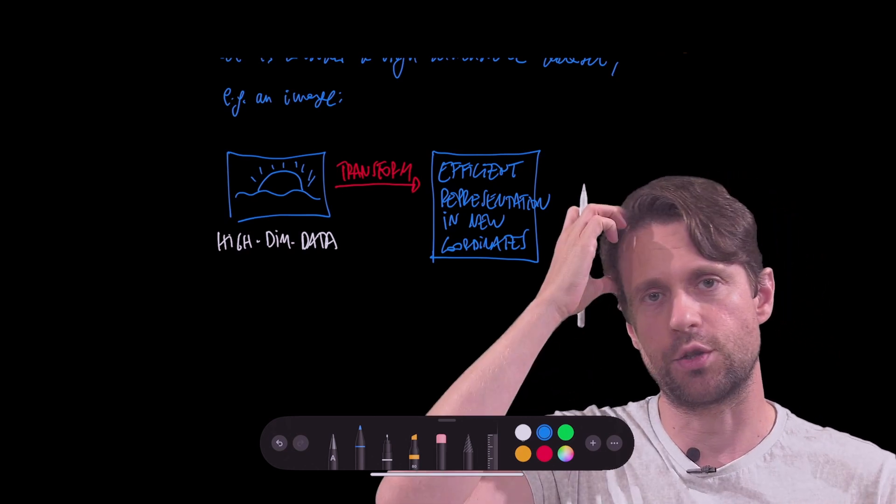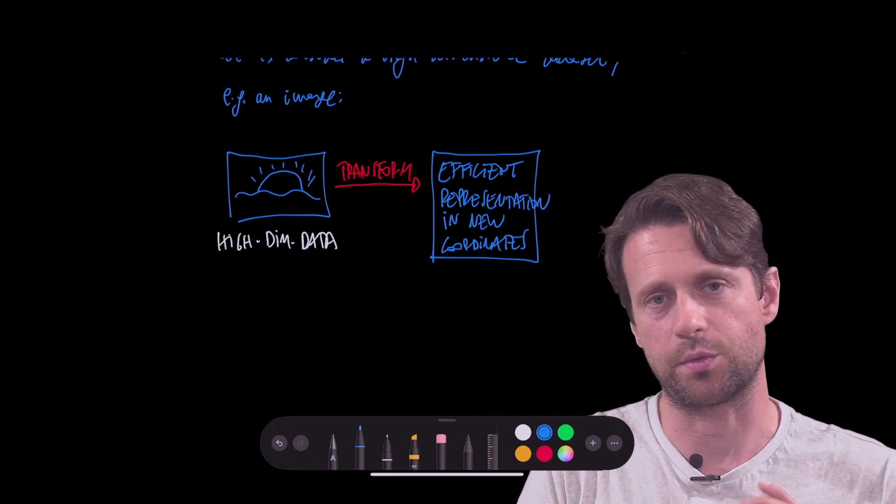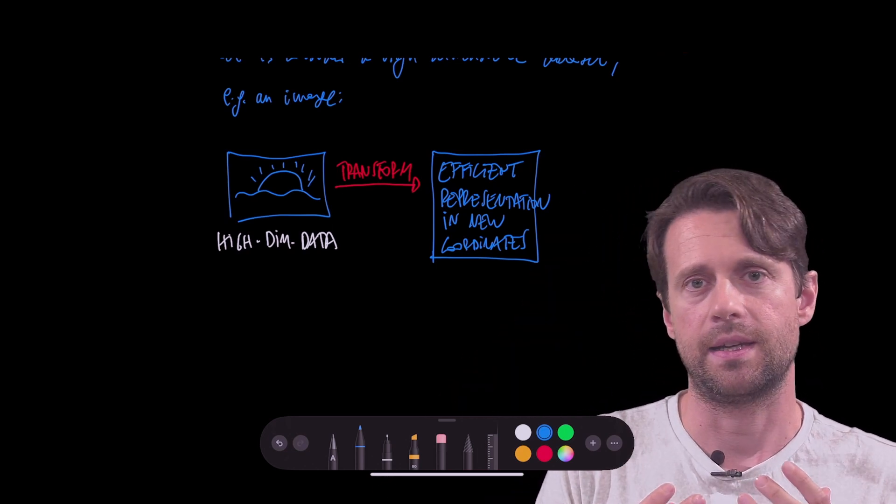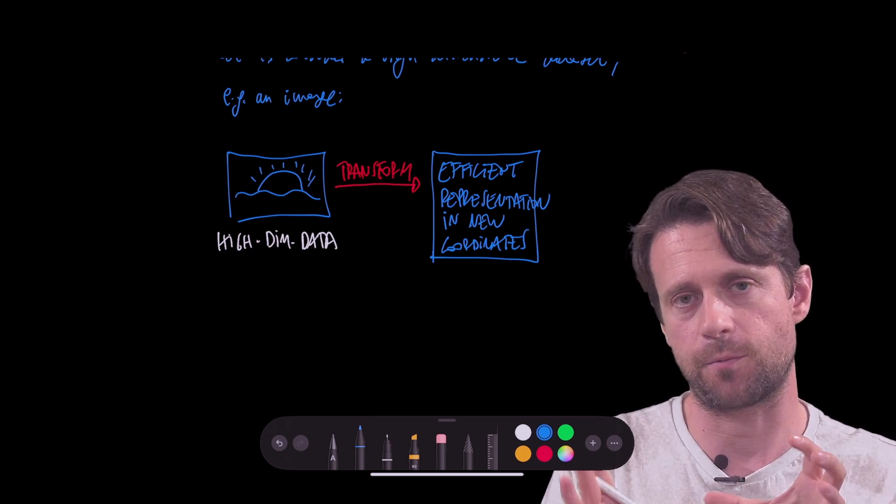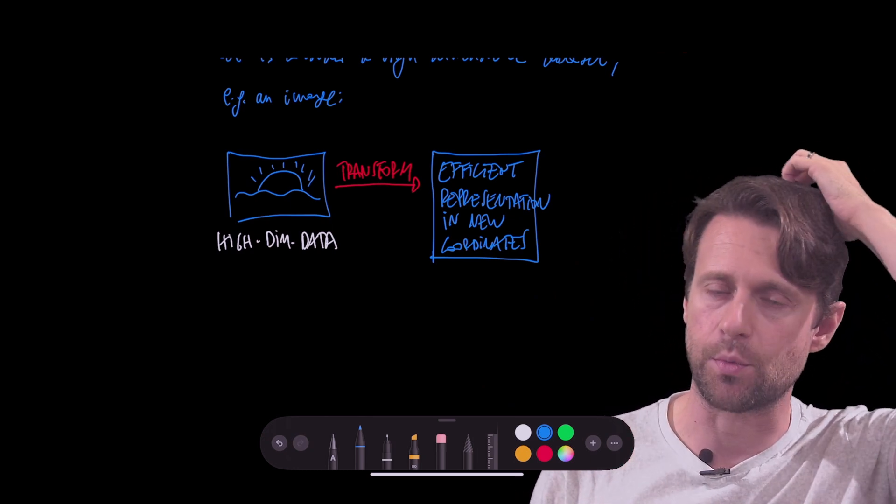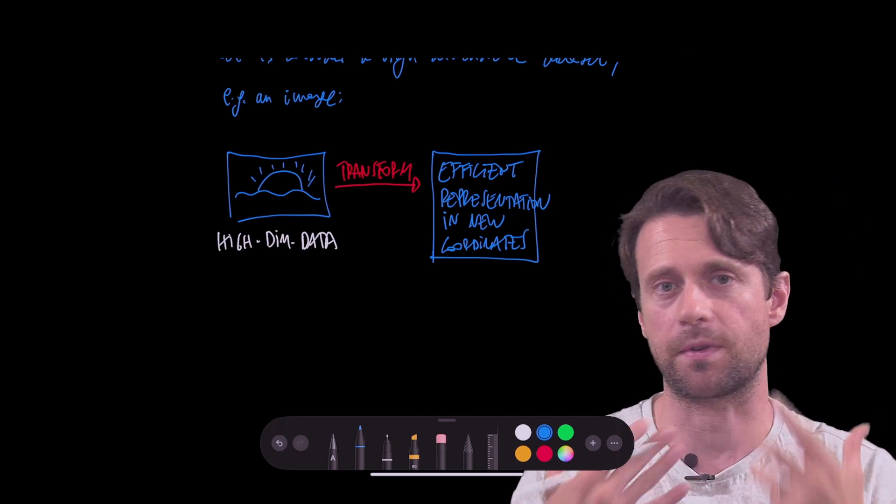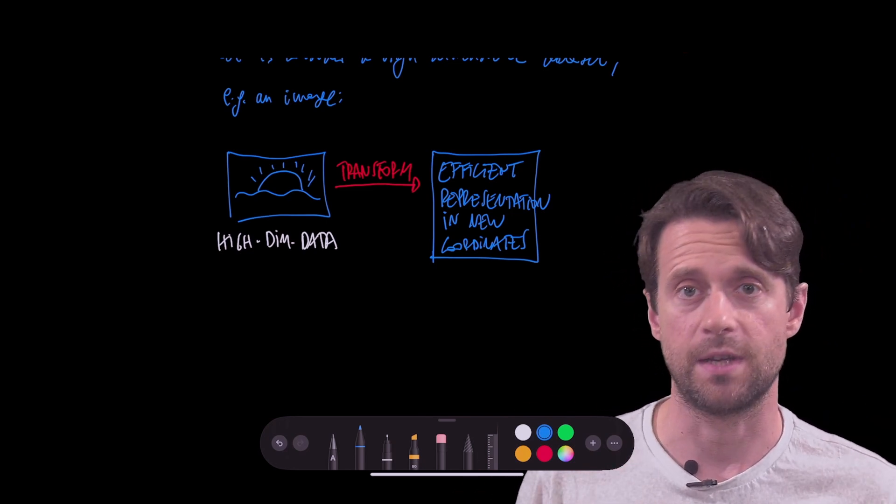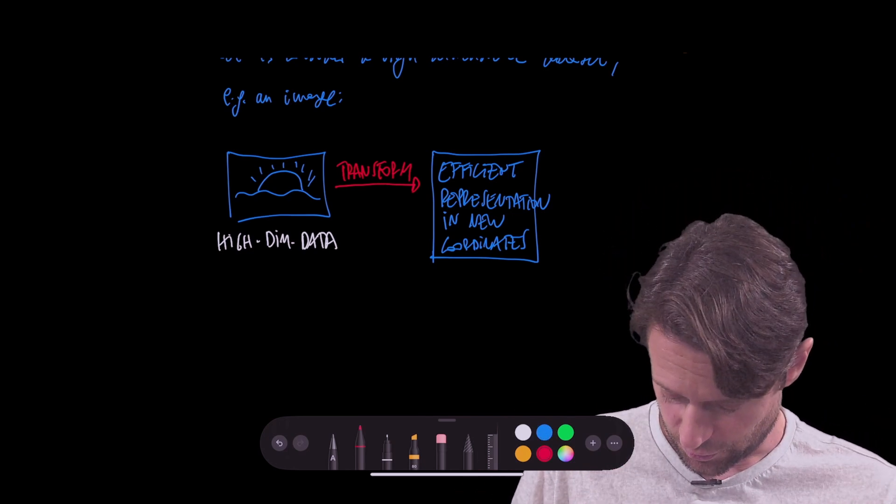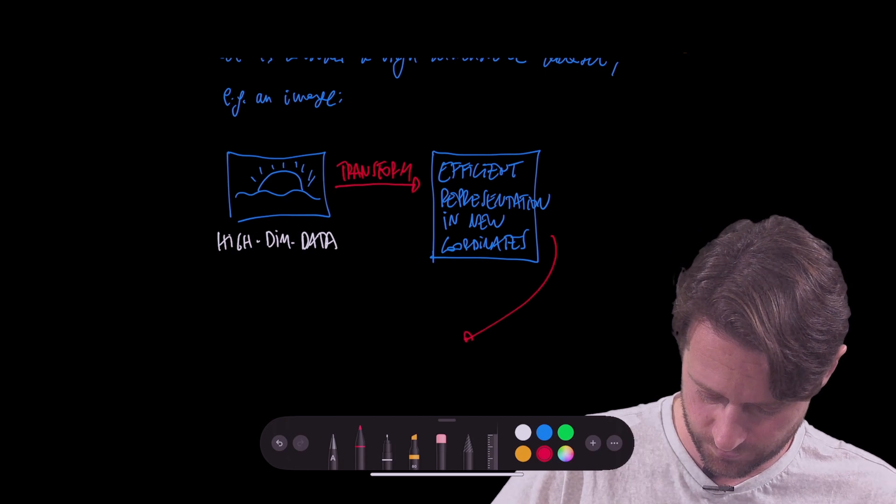So the efficient representation in new coordinates. And once we obtain this new representation, we want to truncate, we want to be able to compress, so that we can not only express information in a more efficient way, but then we want to really retain only the most important pieces of information so we can hopefully save some storage. So we are going to do some truncation.